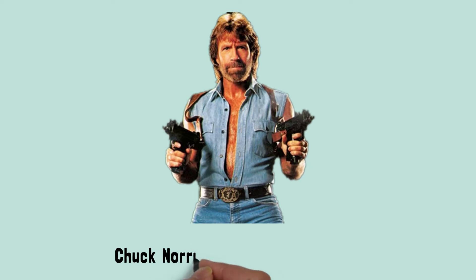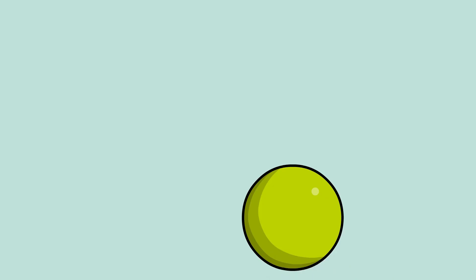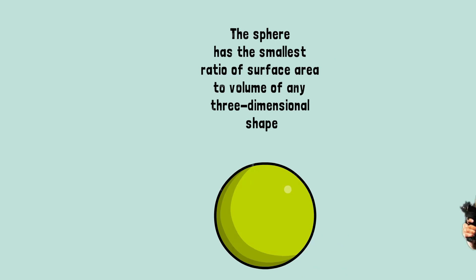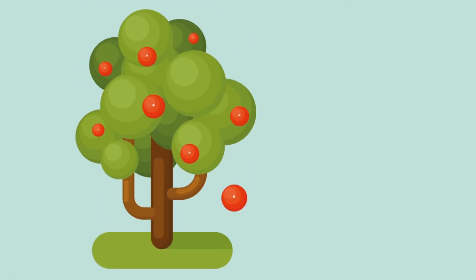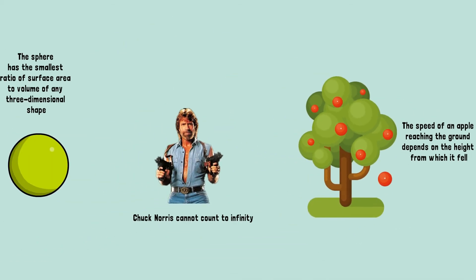Here are three other examples of deductive reasoning: Jack Norris cannot count to infinity. The sphere has the smallest ratio of surface area to volume of any three-dimensional shape. The speed of an apple reaching the ground depends on the height from which it fell. These examples verbalize just the conclusions reached through deductive reasoning — scientific conclusions with extensive proofs predetermining them. Try to see if you can find the claims which support these.